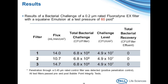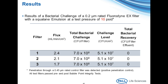This table shows the results of the challenges at 60 PSID. It gives the flux, the total bacteria applied to the filter, the test filter results, and the challenge level. We met the 10 to the 7th per centimeter squared threshold, and no penetration was detected—the analysis filters were clean. At 30 PSID, we get similar results: zero penetration with slightly reduced flux. At 10 PSID, again no penetration, but flux decreases further with the lower pressure.